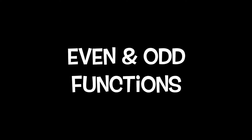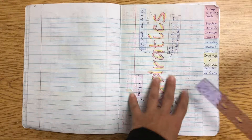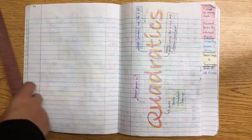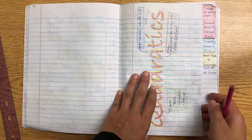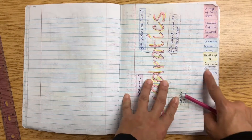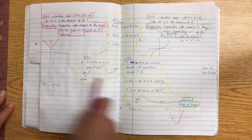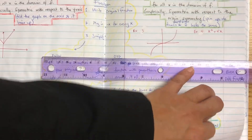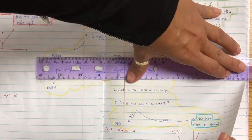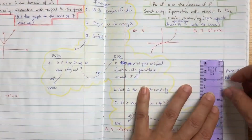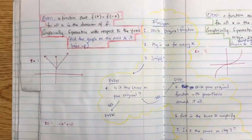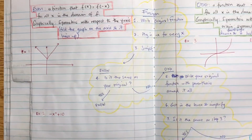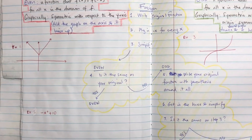We're going to take a look at even and odd functions. Go ahead and make a tab titled 'Even and Odd Functions,' cut it to the margin and all the way down.